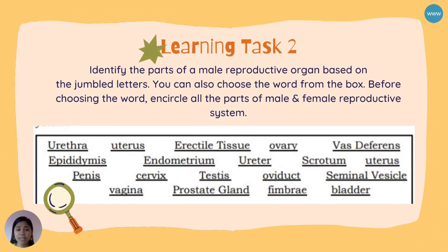Learning task number two: identify the parts of the male reproductive organ based on the jumbled letters. You can also choose the word from the box. Encircle all the parts of the male and female reproductive system. The word box includes: urethra, uterus, erectile tissue, ovary, vas deferens, epididymis, endometrium, ureter, scrotum, penis, cervix, testes, oviduct, seminal vesicle, vagina, prostate gland, fimbrae, and bladder.